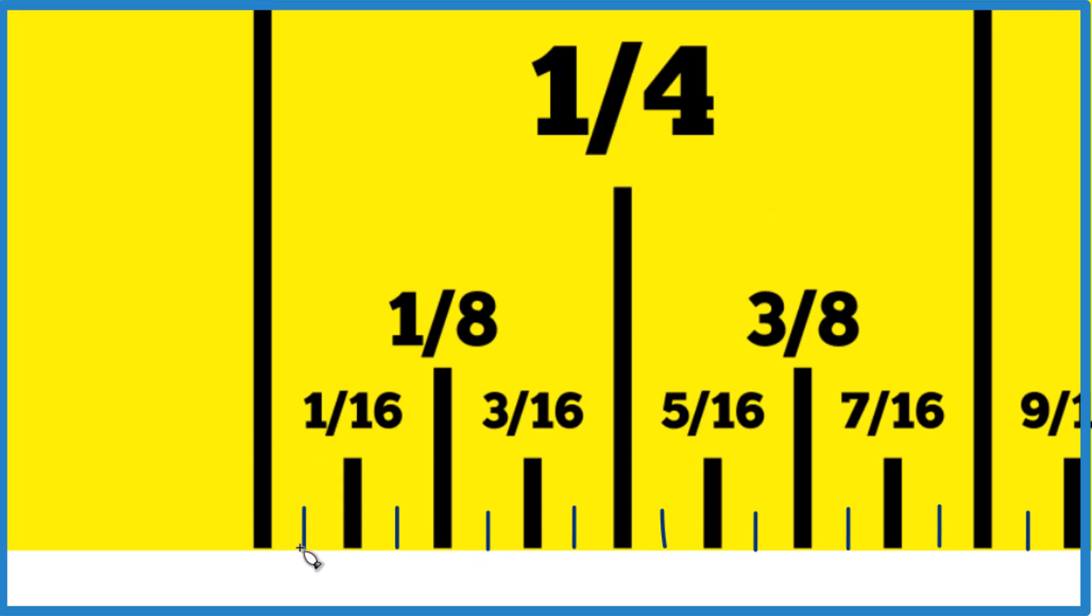We cut the one thirty-second in half right here, we'll get one sixty-fourth. Since we're trying to find three sixty-fourths on our ruler here, we'd go one sixty-fourth, two, three.